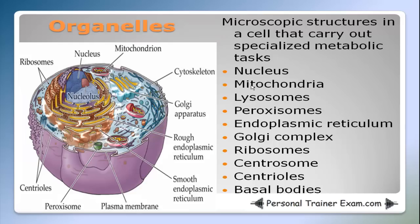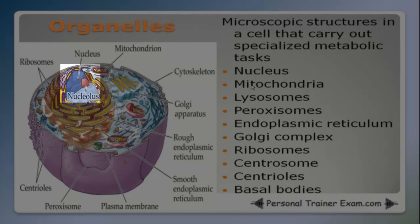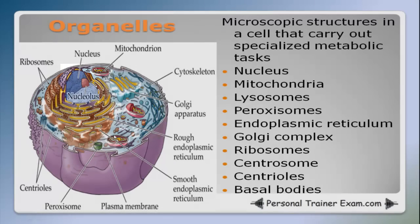Here's a picture of a typical cell. The cytoplasm is the fluid portion of the cell between the nucleus, which is here, and the cell membrane or plasma membrane on the outside. The organelles are housed inside the cytoplasm.